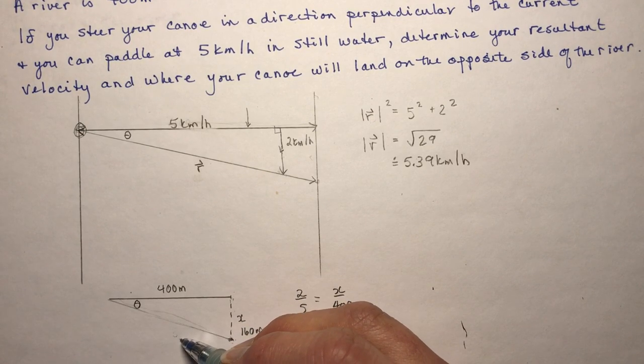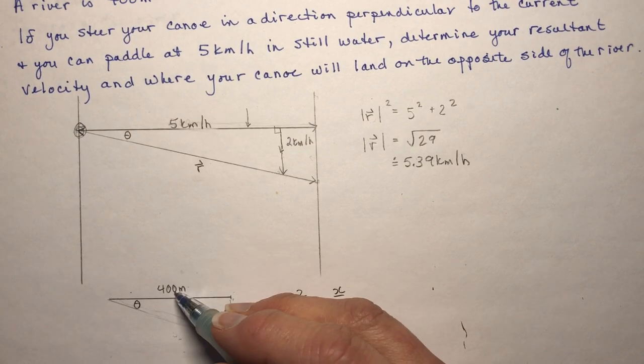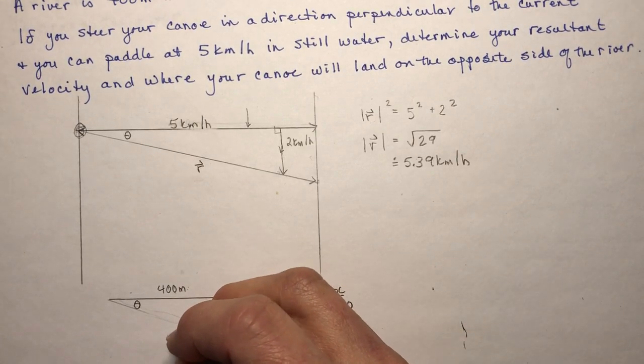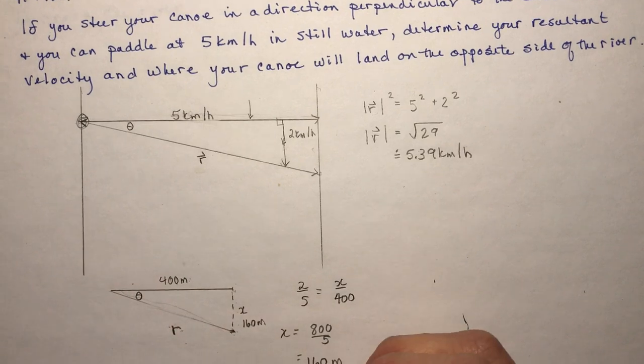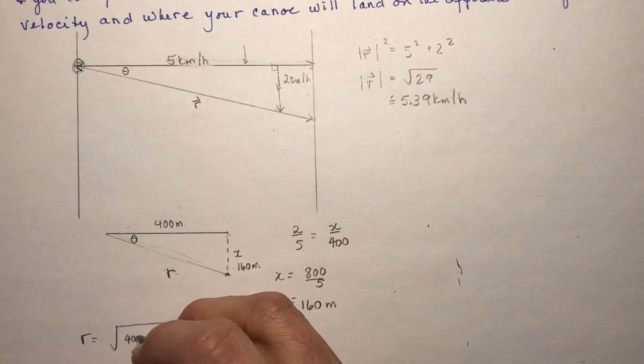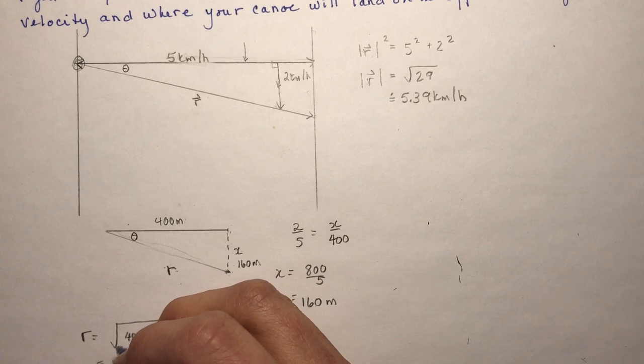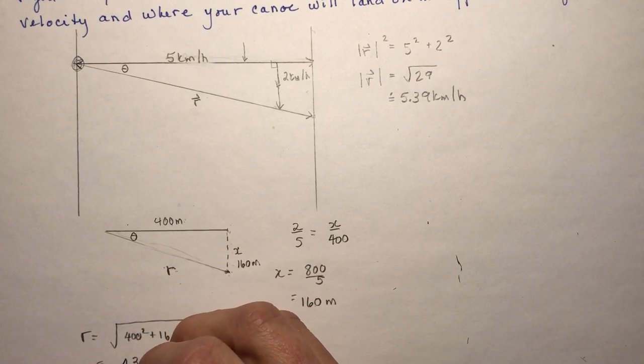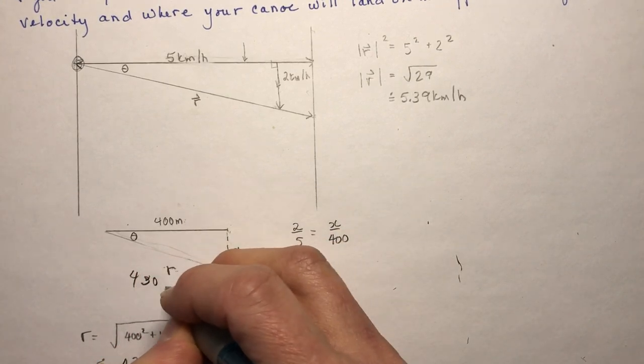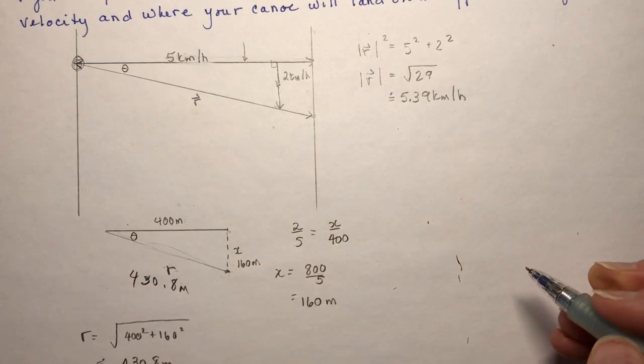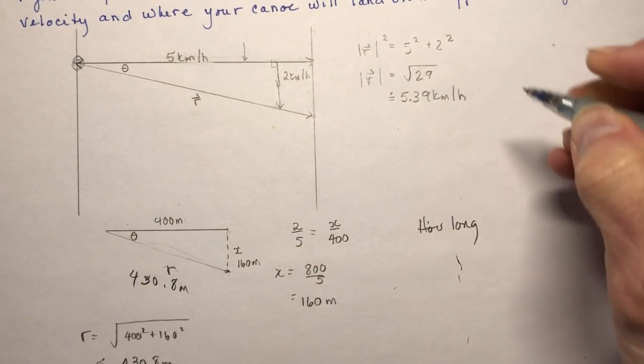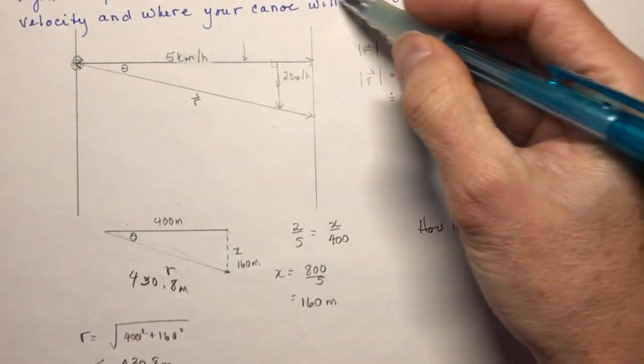Well, if I want to know how long this little ride of mine was, I need to know the distance traveled. What is this distance here? So that's just going to be Pythagorean theorem again. 400 squared plus 160 squared. So this distance, let's call it R because it's our resultant. So R is going to be the square root of 400 squared plus 160 squared. And that's going to give me a distance of about 430.8 meters. So this is 430.8 meters from here to here. Now, if I want to know how long that took me, you have to find resultants.